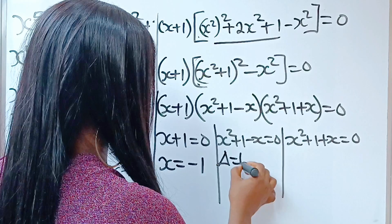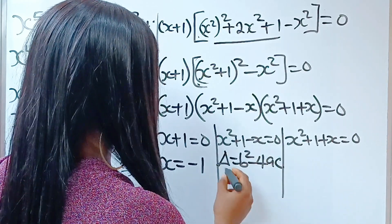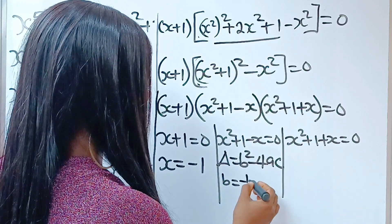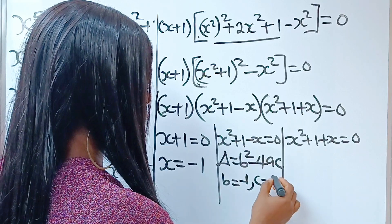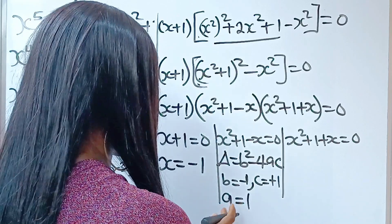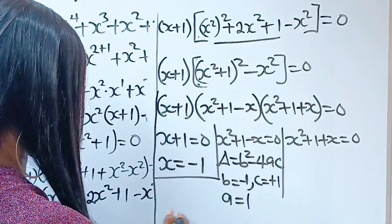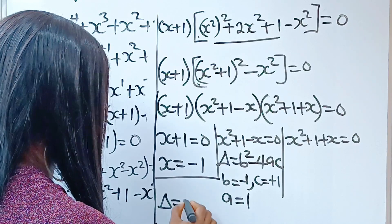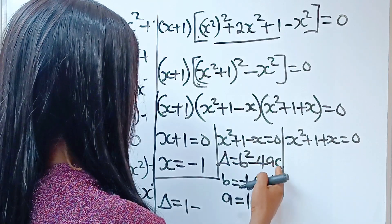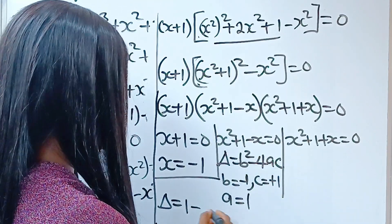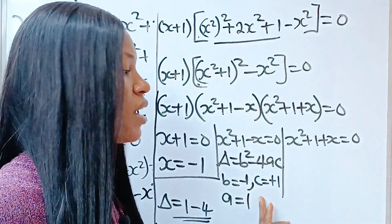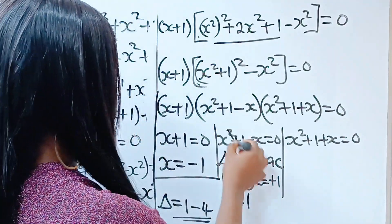The discriminant is equal to b squared minus 4ac. In this case, our b is the coefficient of x, which is minus 1. Our c is our constant, which is plus 1. And our a is the coefficient of x squared, which is 1. So, if we solve this, we have the discriminant equal to minus 1 squared, which gives us 1, minus 4 times 1 times 1, which gives us 4. What we get is minus 3, which is less than 0. That means we don't have any real roots here, so we are not going to make use of this.